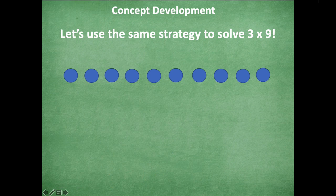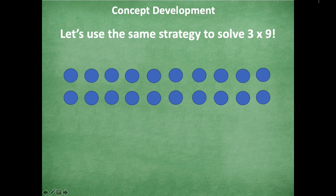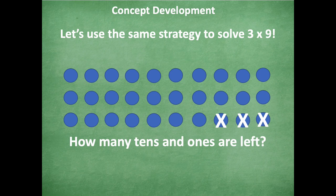All right friends, so let's go over it. So here I have one row of nine, two rows of nine, three rows of ten, sorry. So 3 times 10 is what we're using to help us, right? But I know that's too many. So I have to subtract one, two, three, because that's what I'm multiplying by in our problem. So that's how you know how many to take away each time. So how many tens and ones are left? We have two tens and seven ones. So 3 times 9 equals 27.